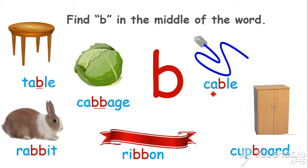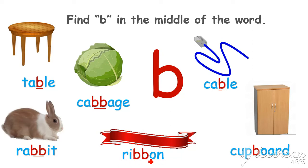Now let's look for the B sound in the word 'cable'. Yes, here is a B sound. Good job! Now let's find B in the word 'rabbit'. Yes, there are two B sounds in the middle of the word 'rabbit'. Good job! Now let's find B in the word 'cupboard'. Here is a B sound. Well done.